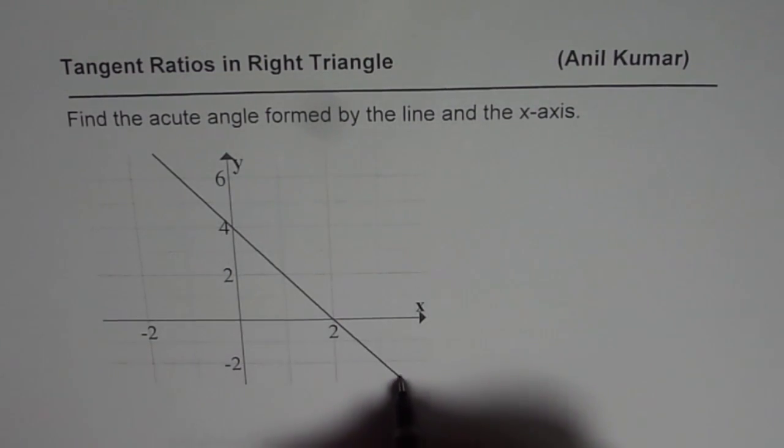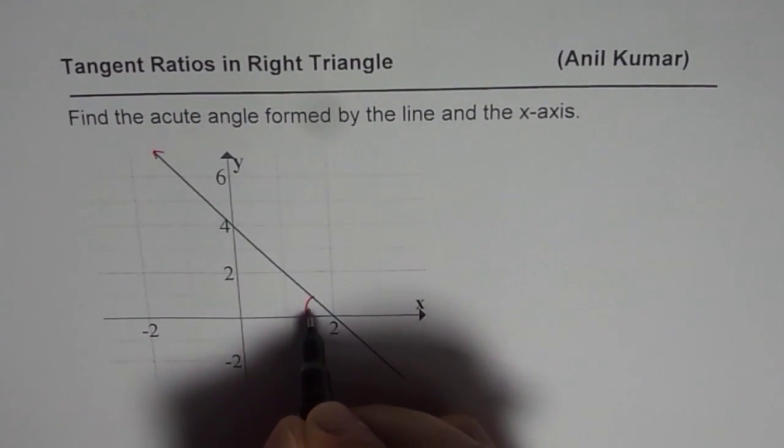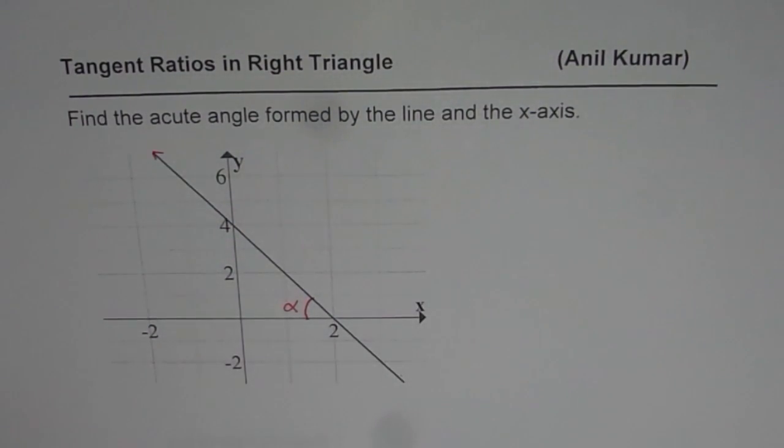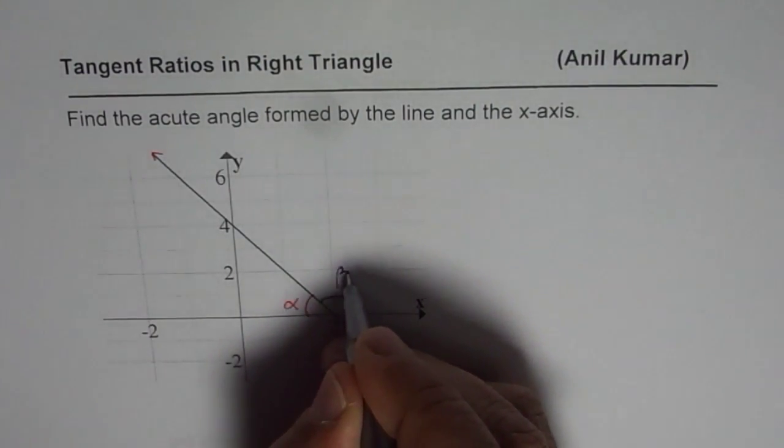So we are given a line here, that's the line, and with the x-axis it makes an angle. This is the acute angle. Let me call this angle alpha. The other one is an obtuse angle. Let me give it another name and let's say the obtuse angle is beta.